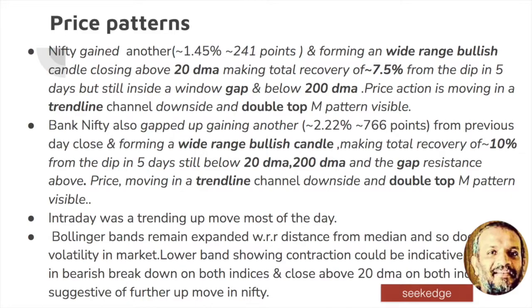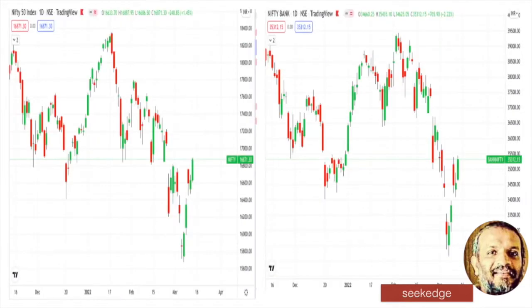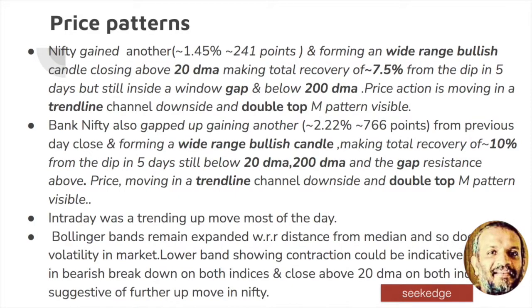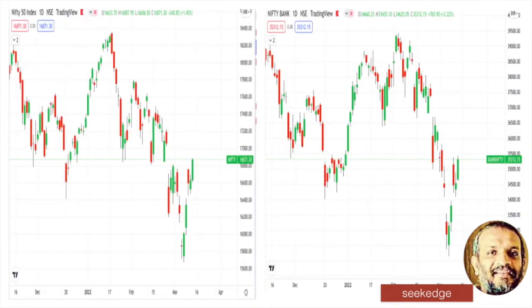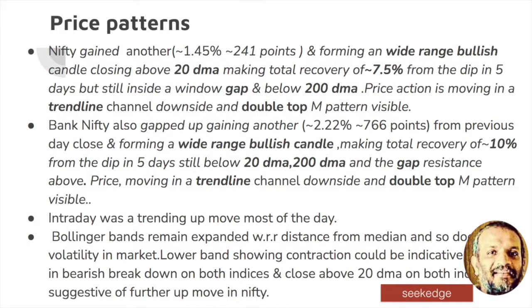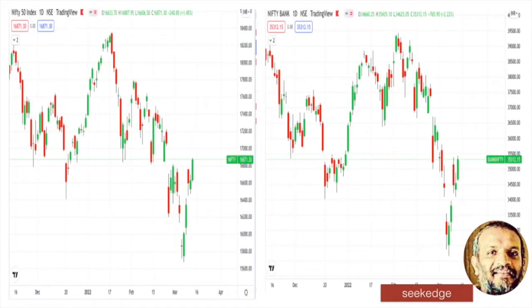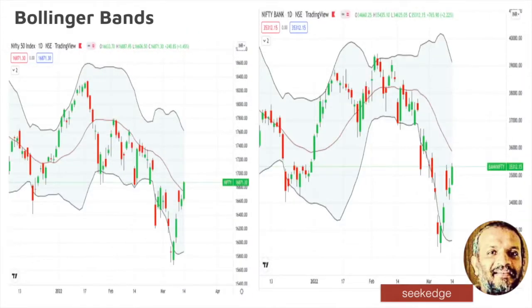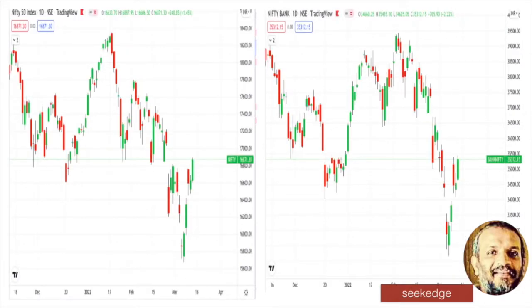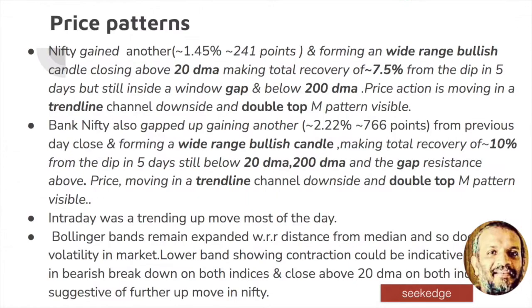It's a very bullish move today, 2.2% up, compared to the previous close on a wide range bullish candle in BankNifty. The recovery is nearly 10% from the bottom. But you can see that it is still far away from the 200 DMA and 20 DMA — it's below that — and the gap resistance is also there on the upside. We're discussing the resistance and support levels in the charts.